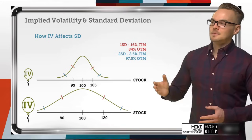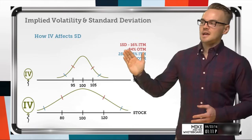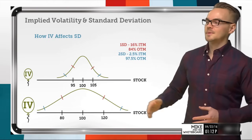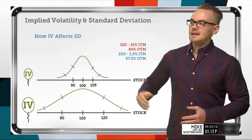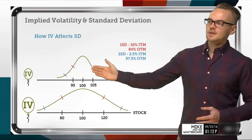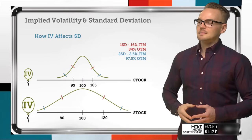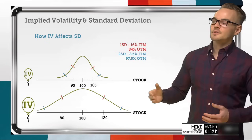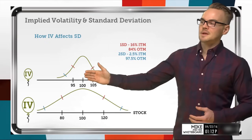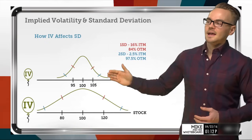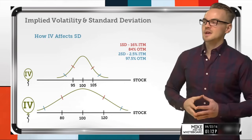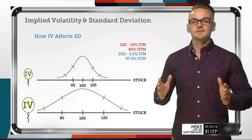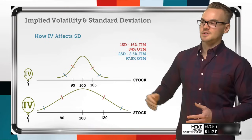And if I go to sell an out-of-the-money put, I'm looking at that same 84% chance of being out of the money, which gives me that one standard deviation mark — and that's going to be at $95. So in a low volatility environment, selling a one standard deviation strangle, I might be able to sell a put at $95 and a call at $105 to capture that one standard deviation range, or the deviation of occurrences from the mean price of $100.